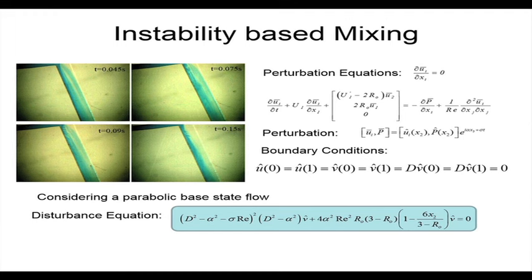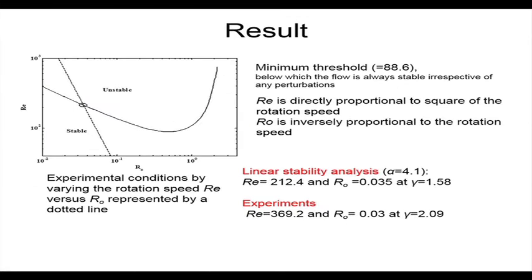Numerical studies and analytical estimates were done for Coriolis-based mixing. For instability-based mixing, perturbation analysis yields a governing equation for sigma, and the solution produces an instability map in Reynolds number versus Rossby number space. The neutral stability curve divides stable from unstable regimes; operating beyond this curve triggers instabilities that drive good mixing, enabling rapid reactions on the rotational platform.